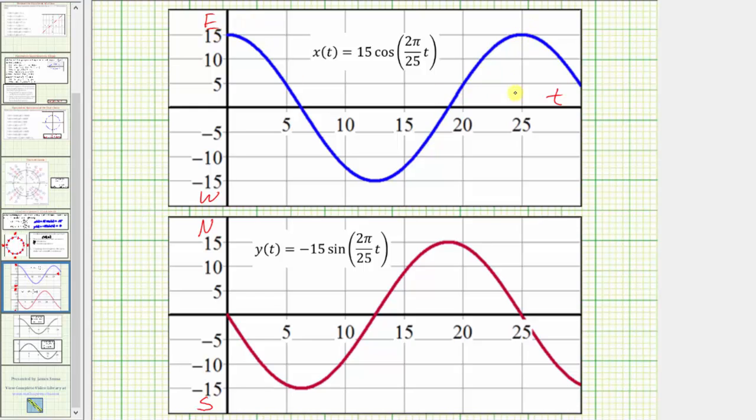Notice how after twenty-five minutes, where the car is fifteen miles east, and in between north and south, which means it's at the point fifteen comma zero.